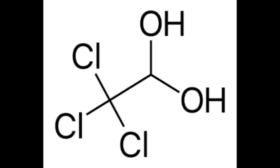Chloral hydrate is soluble in both water and ethanol, readily forming concentrated solutions. A solution of chloral hydrate in ethanol called knockout drops was used to prepare mickey finn. More reputable uses of chloral hydrate include its use as a clearing agent for chitin and fibers and as a key ingredient in Hoyer's mounting medium.